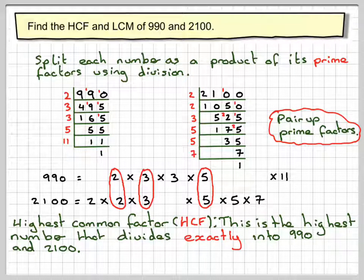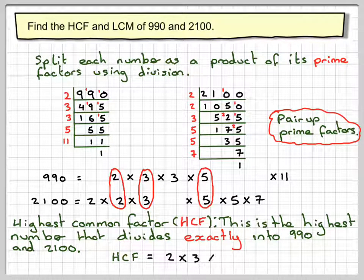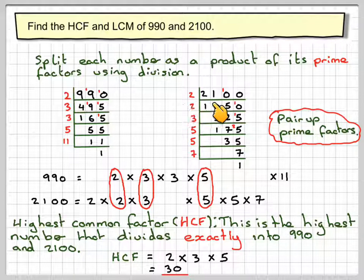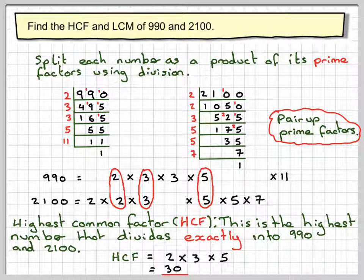We've got a 3 and a 3, and a 5 and a 5. There's nothing else left in common. We've only got one 2 left here. We've got no 3 to pair that up with, no 5 or 7 to pair that up with, no 11 to pair that up. So the highest common factor is a product of those three numbers: 2 times 3 times 5, which gives you 30. So 30 is the highest number that divides exactly into both 990 and 2,100.